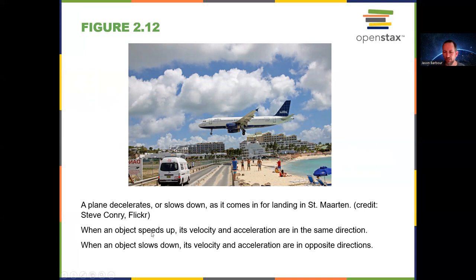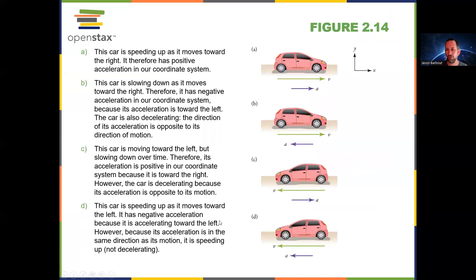This is something good to memorize. Here we have a car with velocity and acceleration both to the right — it's speeding up, both positive. This car has velocity to the right but acceleration to the left — that's slowing down. This car has velocity leftward but acceleration rightward — is it speeding up because it has positive acceleration?